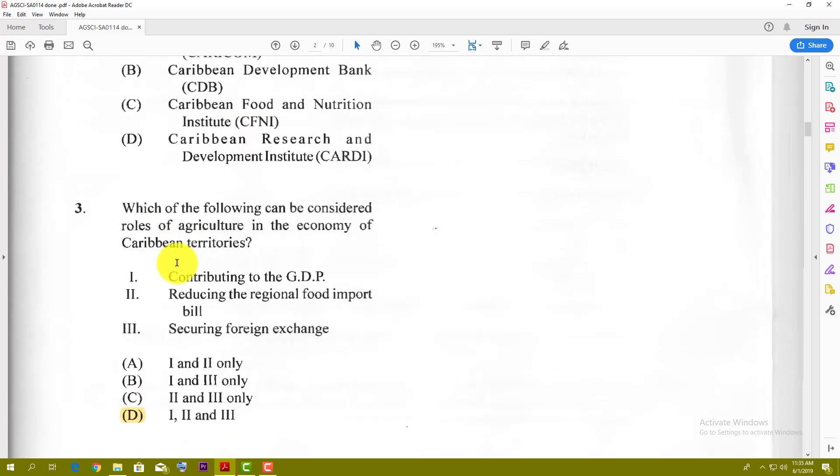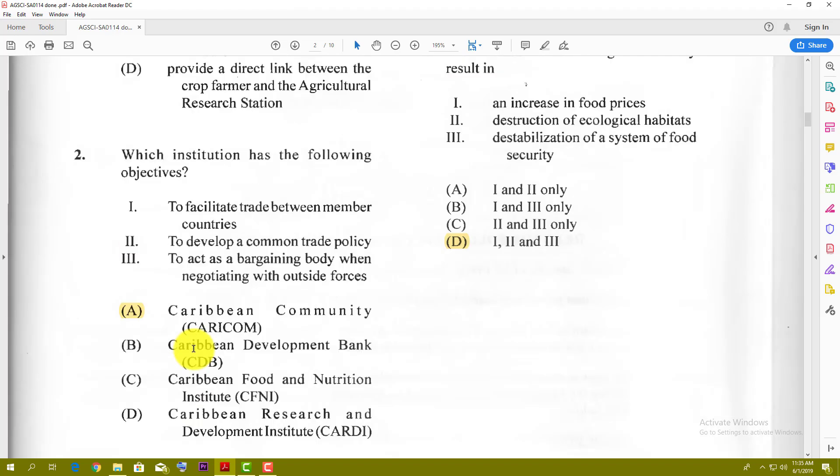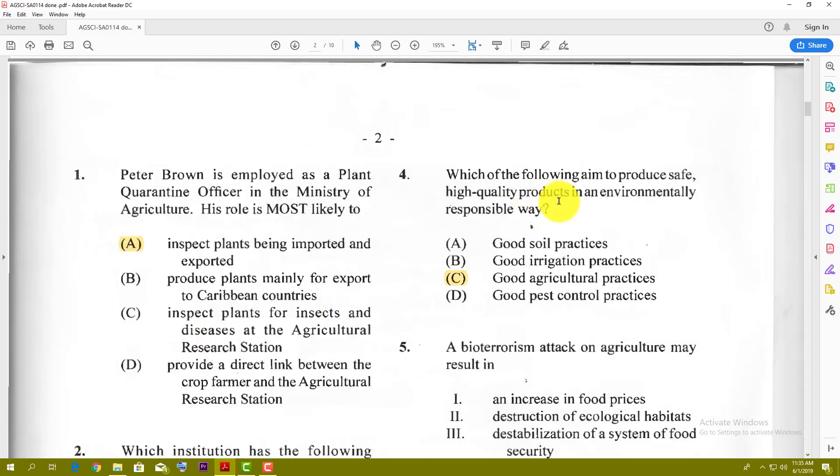Number 3: Which of the following can be considered roles of agriculture in the economy of a Caribbean territory? Contributing to GDP, reducing the regional food import bill, or securing foreign exchange? The best answer here is all of the above, which is D. Number 4: Which of the following aims to produce safe high quality products in an environmentally friendly and responsible way? The best answer here is good agricultural practices or GAP.